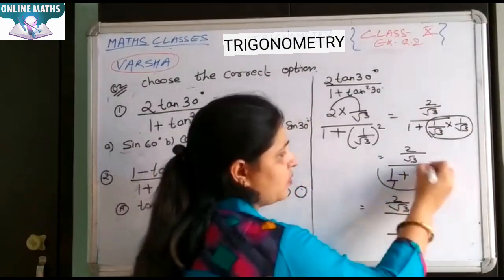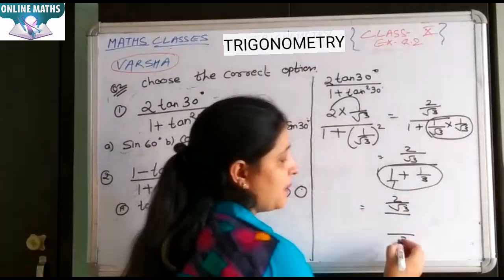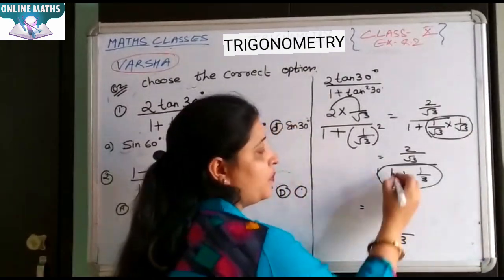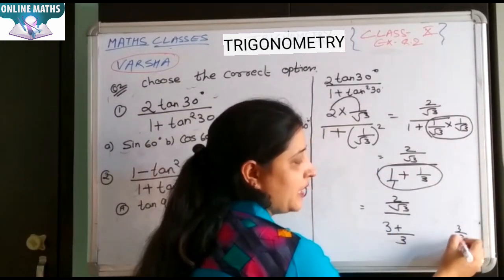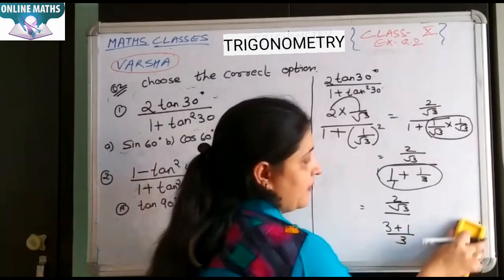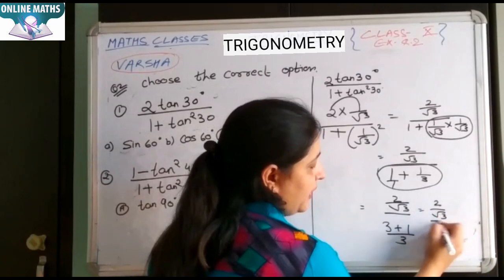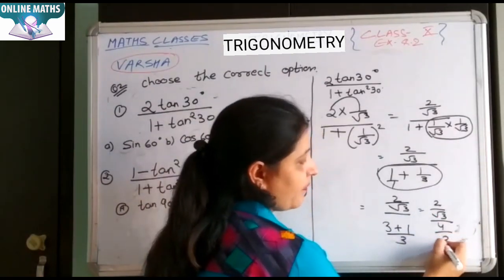Aapko isko solve karna hai, denominator ko. 1 aur 3 ka LCM kya hai? 3. 3 se 1 ko divide karke, to 3. 3 ko 1 se multiply karke, 3. 3 se 3 ko divide karke, 1. So 3 plus 1 is 4, 4 upon 3.